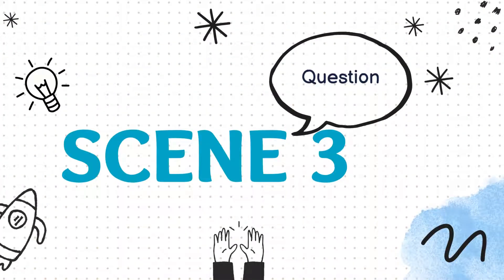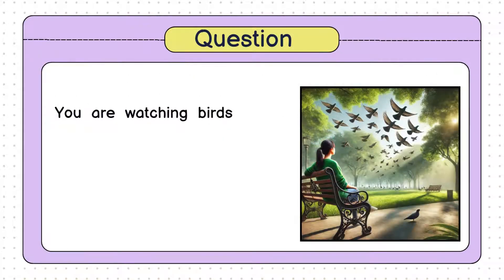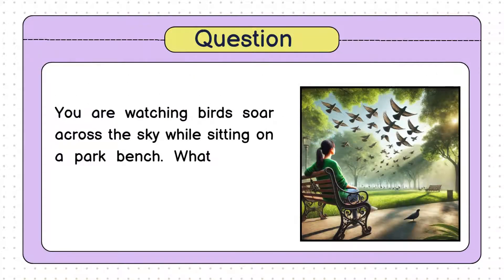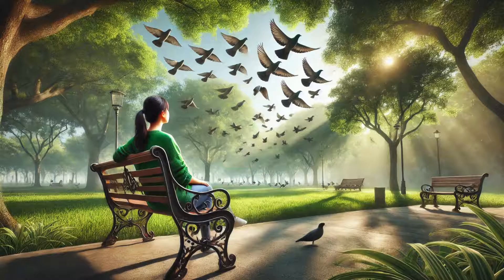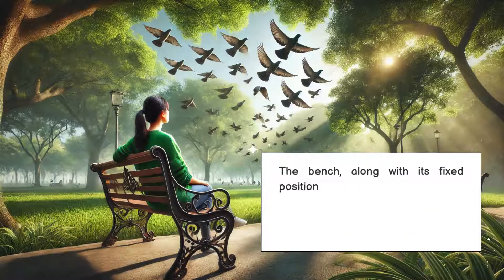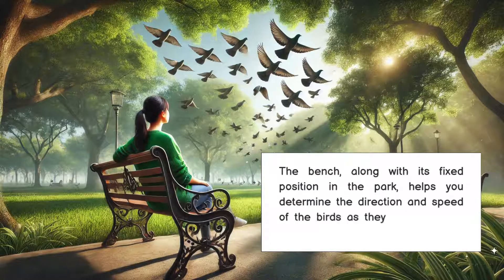We've explored how reference points help us understand motion. Let's test your understanding with a quick question. You are watching birds soar across the sky while sitting on a park bench. What is your reference point when observing the birds' motion? When you are seated on that bench and watching the birds fly, the bench itself acts as your reference point. It's stationary, anchored in one spot in the park, which allows you to observe the motion of the birds relative to your position. This fixed point — the bench — helps you gauge the direction and speed of the birds as they move through the air.